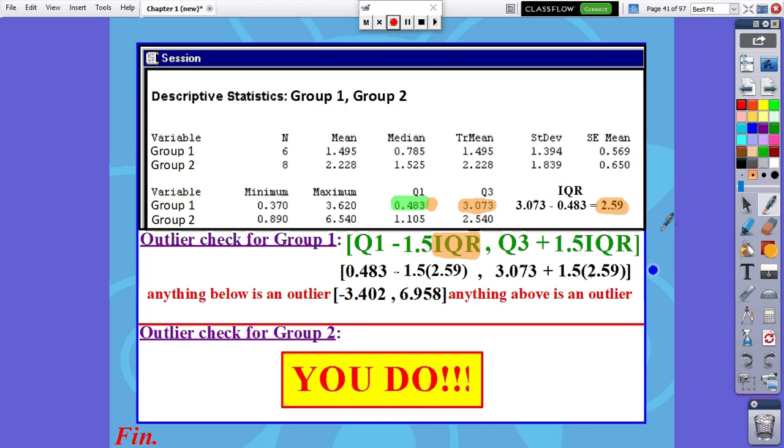So in the end, if I do some math here, anything below this number, and that's what this math came out to be, negative 3.402, if I have any number that's smaller than that, then I consider it an outlier. And if I have any number above, and that's what this math came out to be, 6.958, then anything greater than that number is considered an outlier.